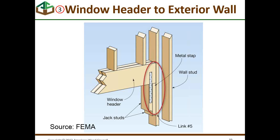The third connector is the window header to exterior wall. There are mechanical connectors that provide attachment between the header and the studs that support the header, illustrated in the red oval. There are typically loads in multiple directions: an uplift load along the plane of the stud, potentially shear wall loads in the plane of the wall, and lateral loads perpendicular to the wall that need to be considered.